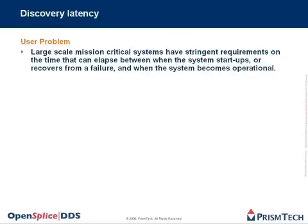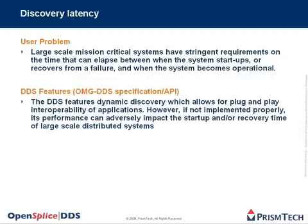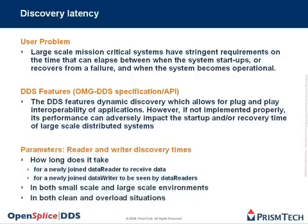Large-scale mission-critical systems have stringent requirements on the time that can elapse between the system startup and when the system becomes operational. OMG DDS supports spontaneous networking. Nodes and applications can join and leave at any time, so a discovery mechanism should be implemented. Sensible parameters are reader and writer discovery times — how long does it take for a newly joined reader to receive data, and for a newly joined data writer to be seen by data readers. This should be measurable in both small-scale and large-scale environments, in clean and overload situations.